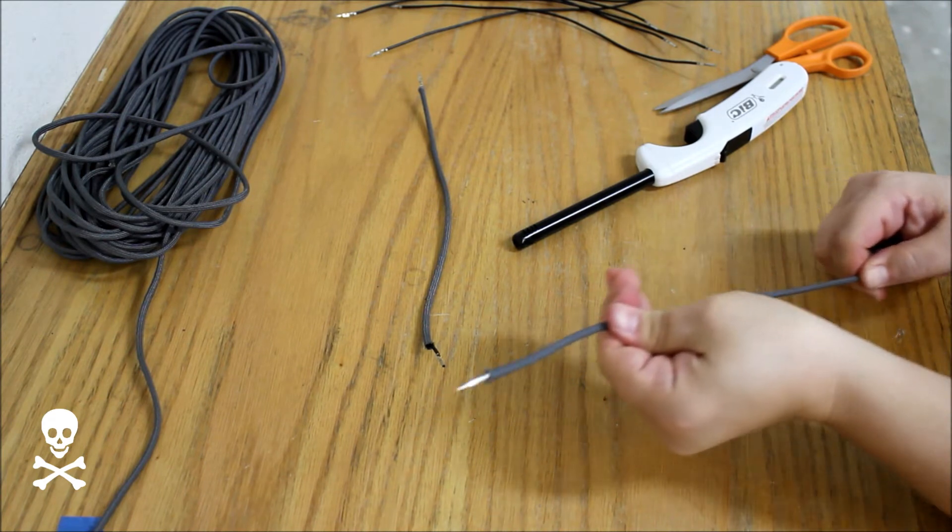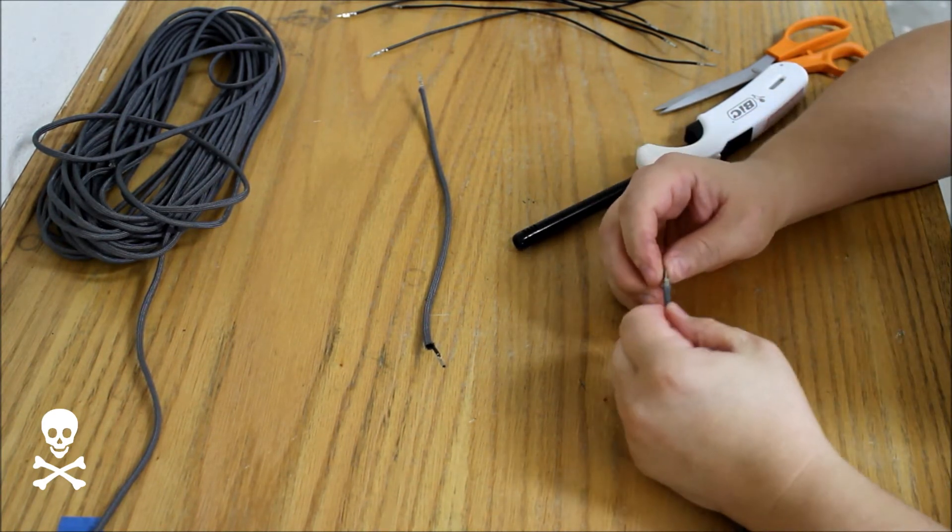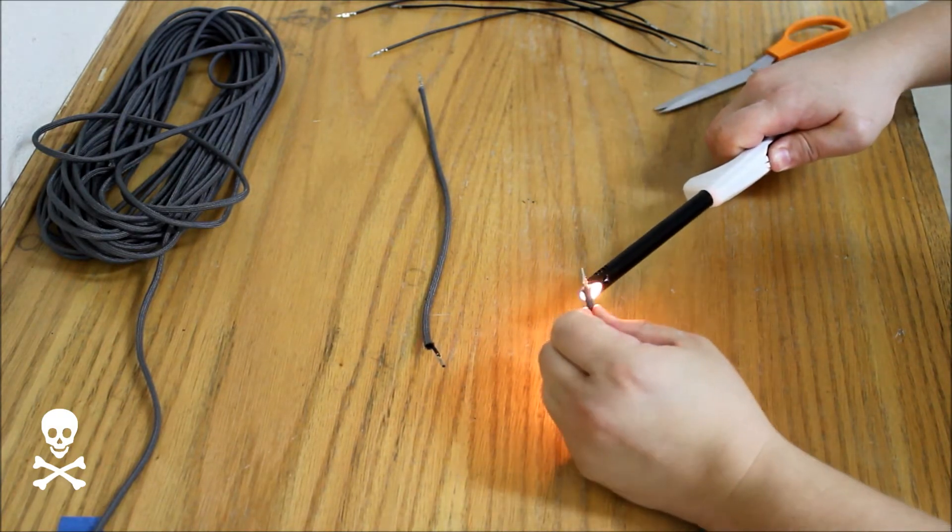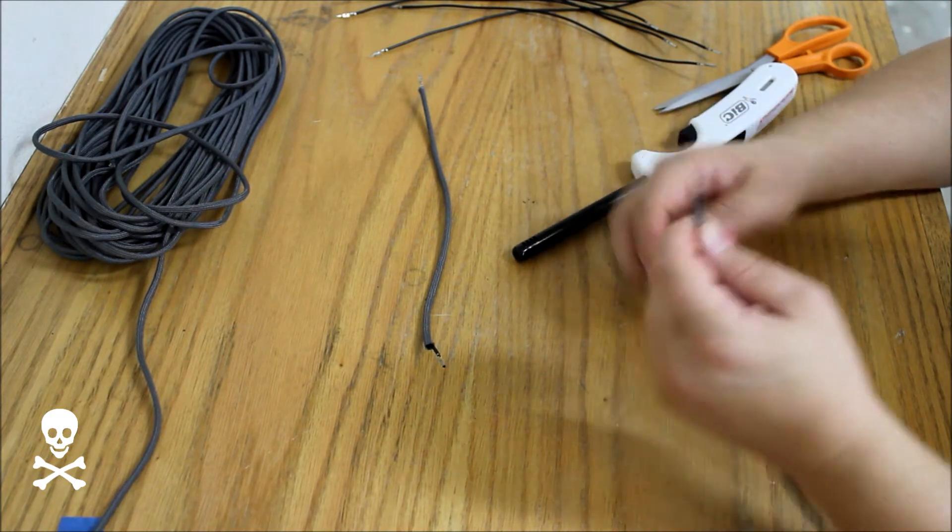Pull it a little bit tighter here and get this all the way up around the base again, and then you just do the same thing. You just melt the end, form it around the neck.